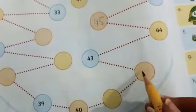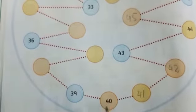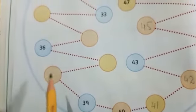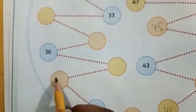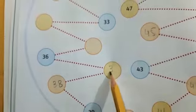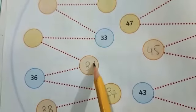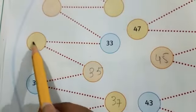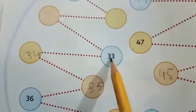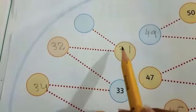And 42, then 41, 40, 39. What comes before 39? 38, 38, 37, 36, 35, 34, 33, 32, 31.